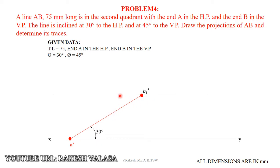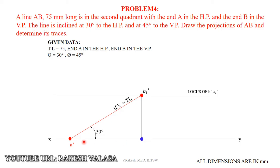Now draw the locus line; on that locus line we can get the final front view point — this is the locus of B dash and B1 dash. From the initial front view we can get the length of the top view. Draw a vertical projector up to the locus of A dash to get the point B1. The segment A dash B1 is called the length of the top view.